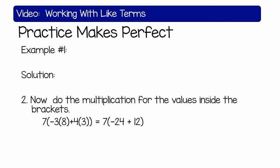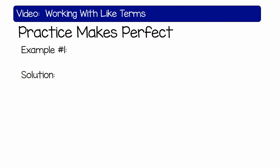7 times negative 24 plus 12. 7 times negative 12, which is negative 84.